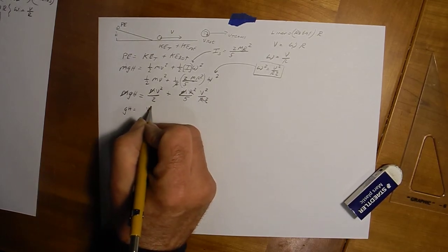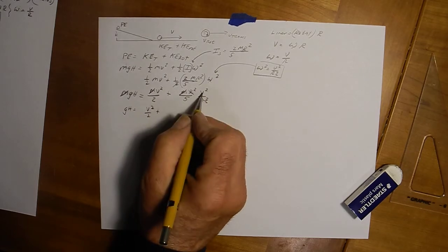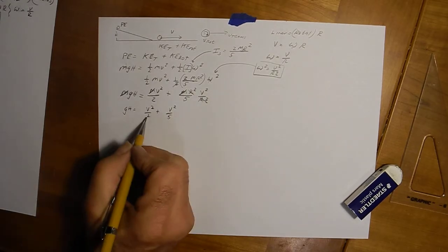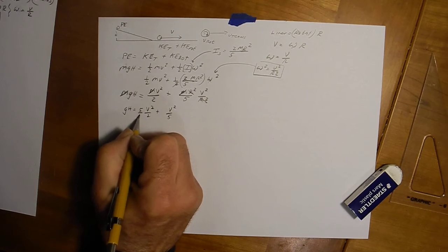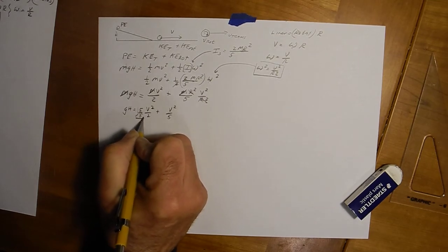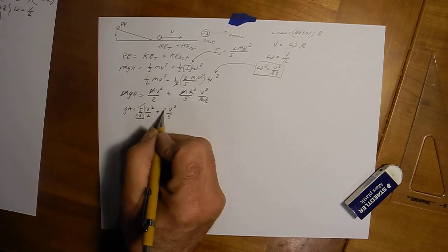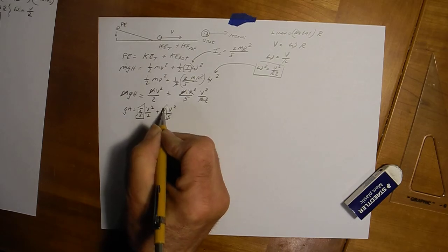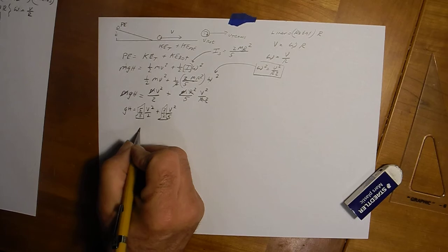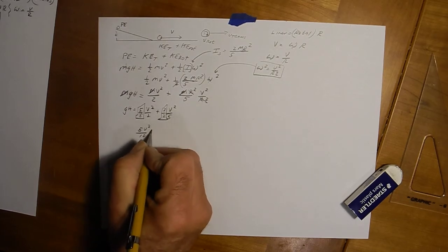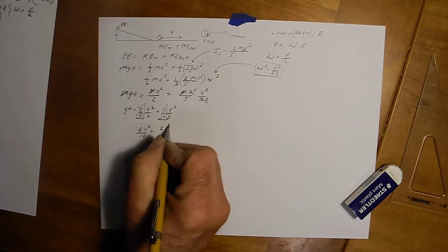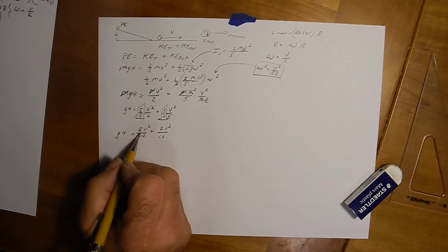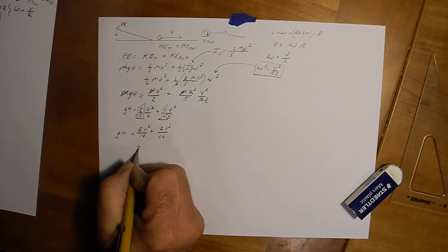So here we have, well let's just write it out, v squared over two plus v squared over five. To get a common denominator, we're going to multiply this by five over five, which is a big fat one. Okay, we'll multiply this guy by two over two, which is also multiplying by one. So this gives me five v squared over ten plus two v squared over ten equals gh. Add this up, so five tenths plus two tenths is seven tenths, seven v squared over ten equals g times h.